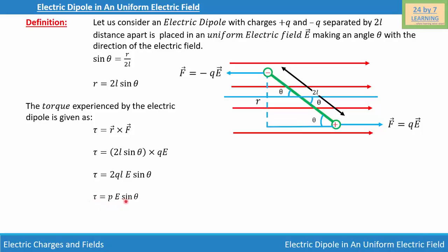Simplifying further, τ = p × E in vector form, where tau is the torque, p is the electric dipole moment, and E is the electric field. The torque experienced by the electric dipole equals the vector cross product of the electric dipole moment and the electric field. This is how we define the behavior of an electric dipole in a uniform electric field.